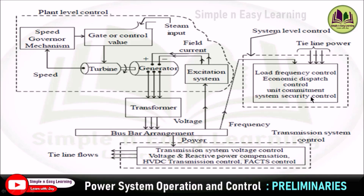The system control actions are carried out by system control centers, which must have information including control area frequency, output of generating units, and tie line power flow to interconnected areas, with separate control centers for each area. There are four levels of control actions. In the first level, control actions are carried out at the generating station and substation using a local control center with remote terminal units (RTU). In the second level, control of the sub-transmission network is carried out by the area control center. In the third level, control of the transmission system is carried out by the state load dispatch center using SCADA. In the fourth level, control of the interconnected power system is carried out by regional control centers.